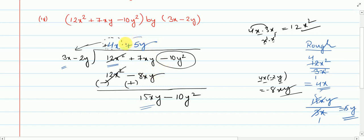Now what I will do is this plus 5y will multiply to each term inside over here. So 5y into 3x, so 5 threes are 15 and x into y you get xy. Then here plus and here minus, plus into minus is minus. 5 twos are 10 and y into y is y squared.